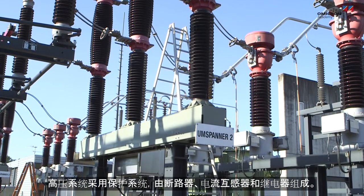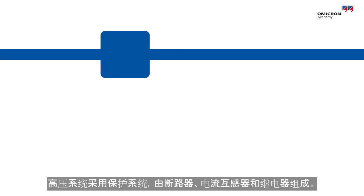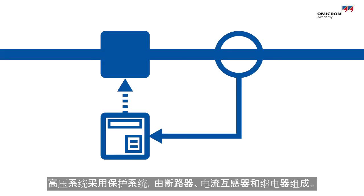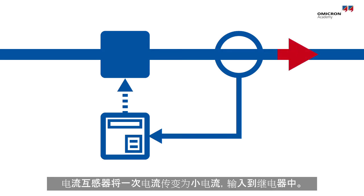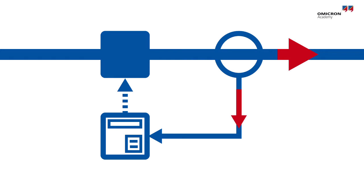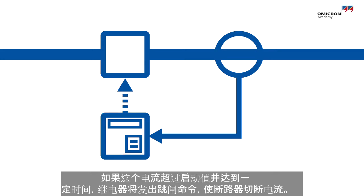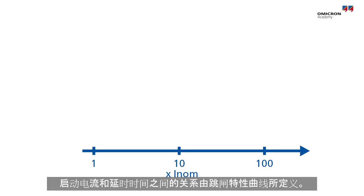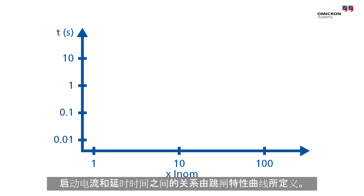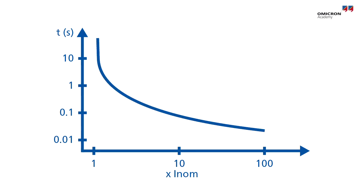High voltage systems use a protective system consisting of circuit breakers, current transformers, and protective relays instead. The current transformer transforms the primary current into a smaller secondary current that is fed into the relay. If this current exceeds the pickup value for a specific duration of time, the relay will issue a trip command and cause the circuit breaker to interrupt the current path. The relationship between the pickup current and delay time is defined by the tripping characteristic curve.